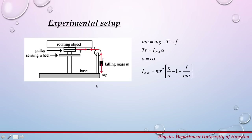Now let's talk about the experimental setup. On your table you will have a setup like this: a rotational base with a pulley and a sensing wheel. You will have a photogate that will record the velocities for this pulley. Across this pulley you have a falling mass, and the rotating objects will be mounted on the top of this base. Mass of the pulley is neglected, but the friction force will be measured using the conservation of energy. The free body diagram includes the gravitational force for the falling mass, the tension in the cord, and a friction force opposing the motion.